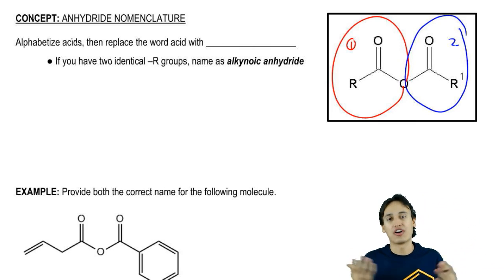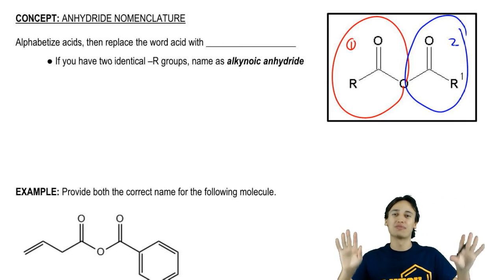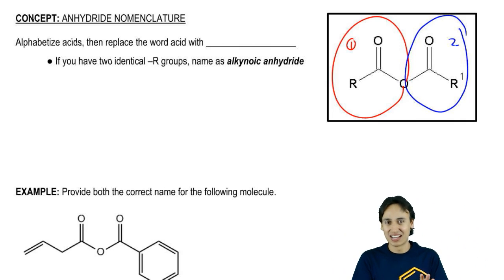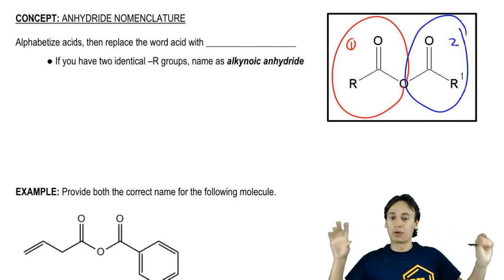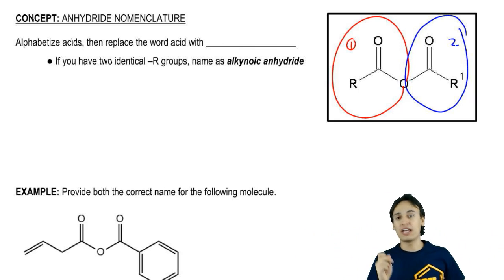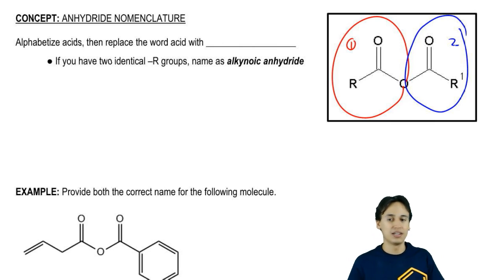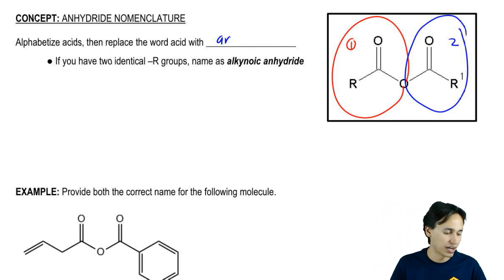Side note, that's actually how you make anhydrides. You make anhydrides by combining two carboxylic acids into an anhydride. That's where the name stems from. What we do is it's really easy, you just alphabetize your two different acids, visualize them with the carbon chains. But then instead of ending with the word acid, you would end with the word anhydride.